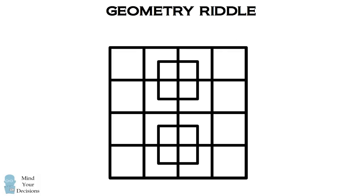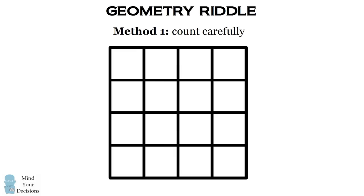One way to solve this problem is by counting the number of squares very carefully. We'll remove the two squares that are in the middle to be left with a 4 by 4 grid.